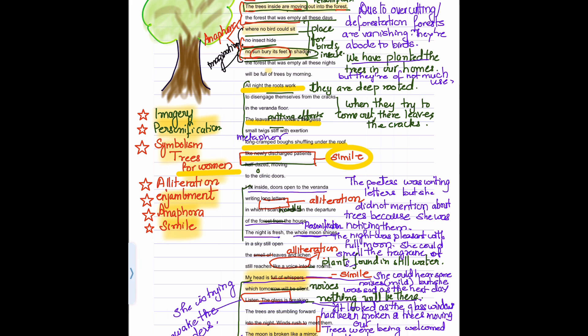The whole moon shines in a sky still open. Night was pleasant. It was a full moon. The smell of leaves and lichen. Lichen are those plants that are greenish, found in the water. She could smell that. And when the leaves move, the small rustling, murmur, that she could hear. My head is full of whispers means here it is synecdoche.